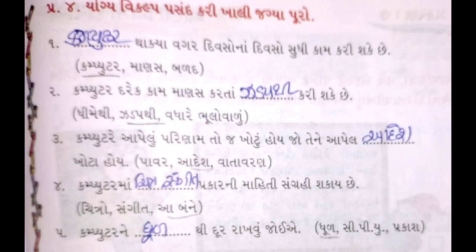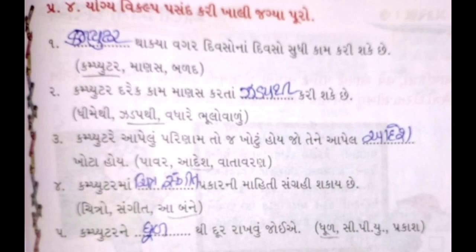કમ્પ્યૂટરમાં ચિત્ર અને સંગીત પ્રકારની માહિતી સંગ્રહ કરી શકાય છે. વિદ્યાર્થી મિત્રો, ખાલી જગ્યામાં 'ચિત્ર' અને 'સંગીત' આ બંને લખવાના છે.